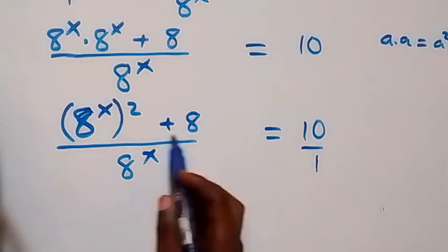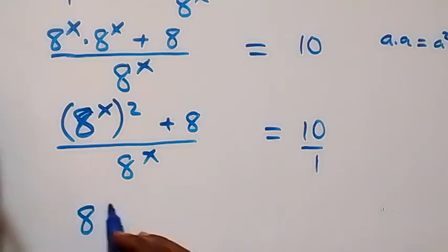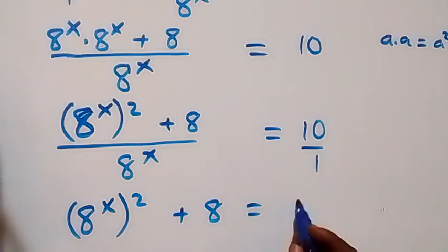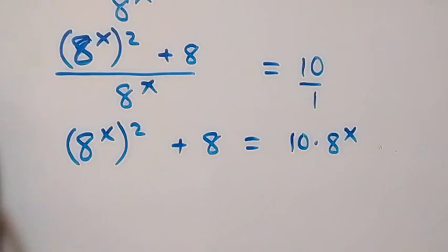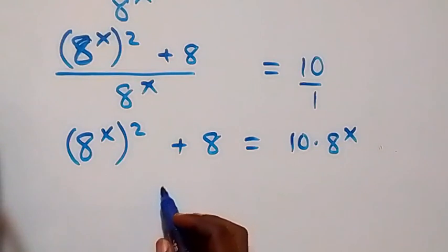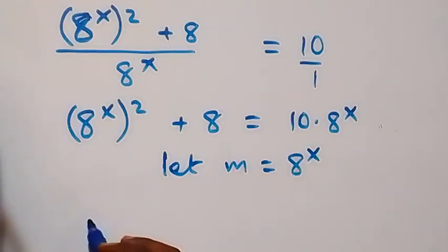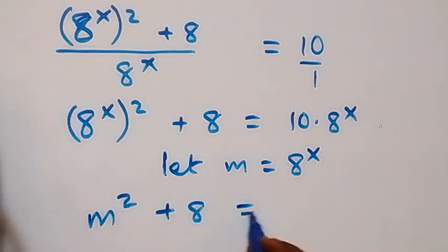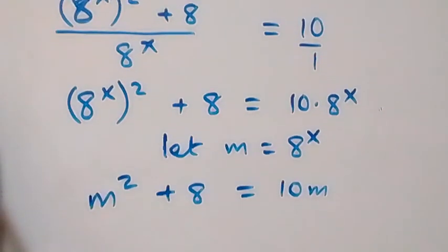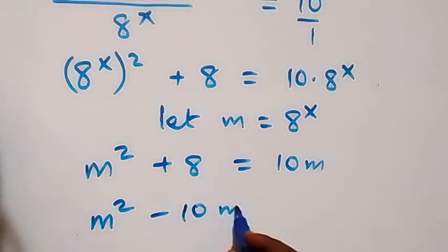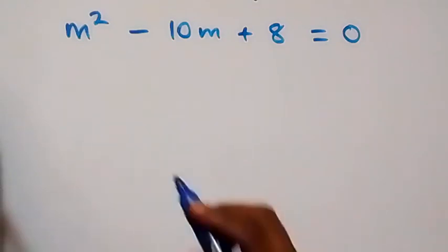Cross-multiplying gives us 8 raised to power x squared plus 8 equals 10 times 8 raised to power x. Now we let m equal 8 raised to power x. We can write this as m squared plus 8 equals 10m. Rearranging gives us m squared minus 10m plus 8 equals 0.